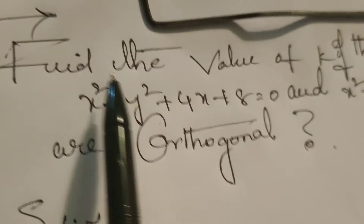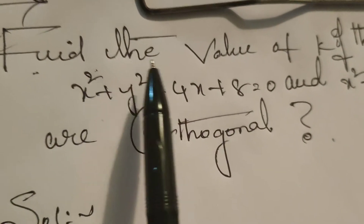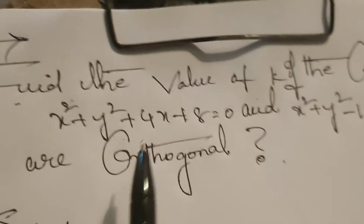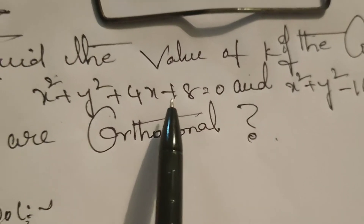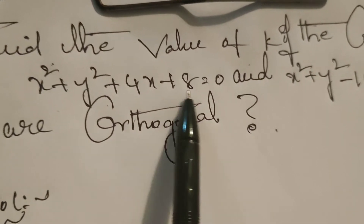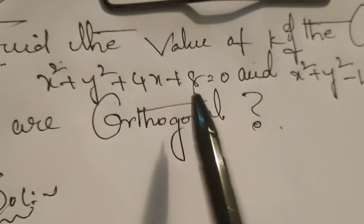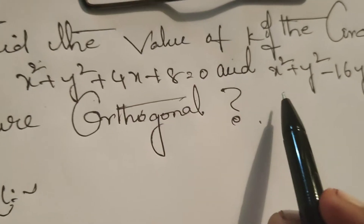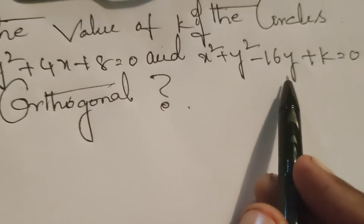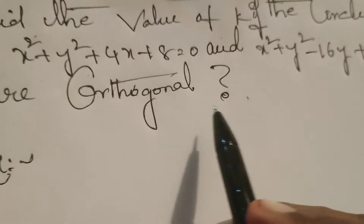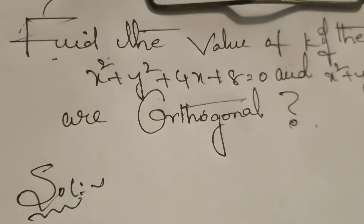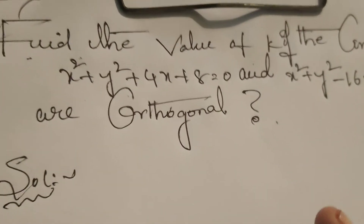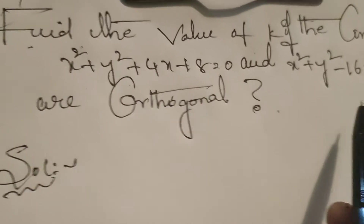Hi everyone, this is Dr. Hithi. Today we are going to find the value of k. If the circles x squared plus y squared plus 4x plus 8 equals 0, and x squared plus y squared minus 16y plus k equals 0 — in this problem, we are to prove that the two circles are orthogonal.